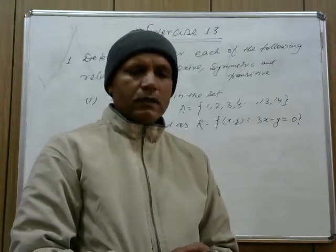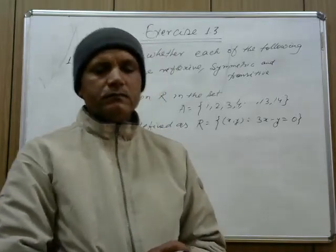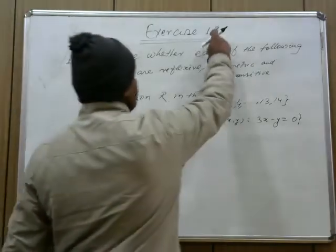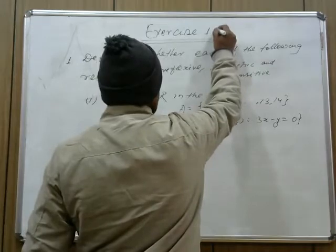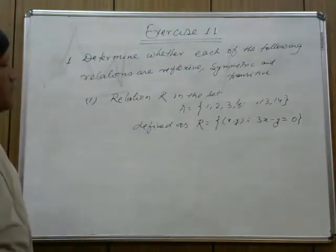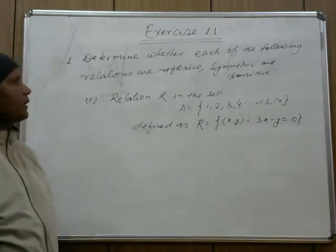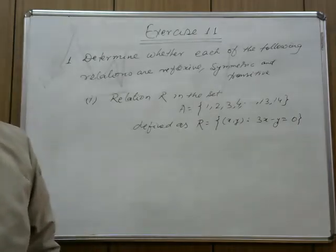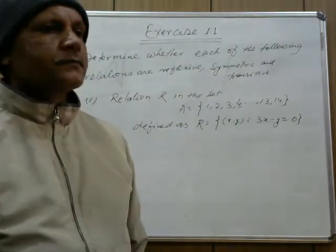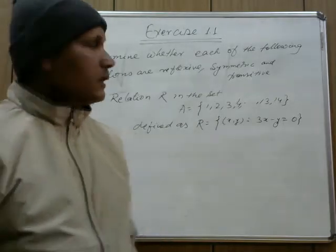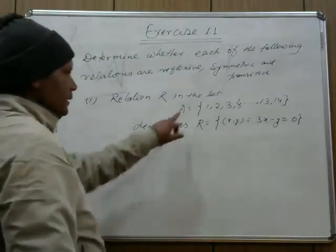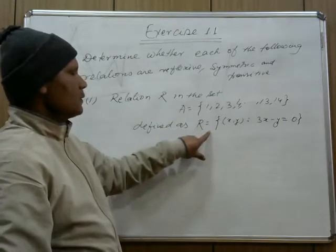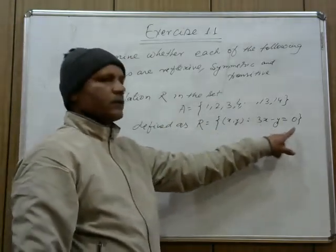After the concept of relations, I thought it is better to go for the exercise. I have taken Exercise 1.1 of your book. The first question is: determine whether each of the following relations are reflexive, symmetric, and transitive. This is the NCERT book, chapter one, first question. The relation R in the set A has numbers from 1 to 14, defined as R = {(x,y) : 3x − y = 0}.